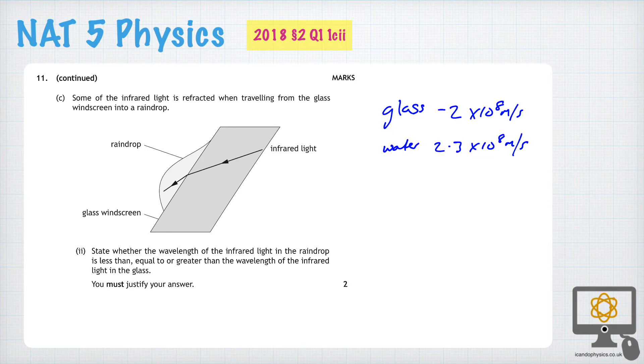And of course, because we know the formula V equals F lambda, if the speed increases and the frequency stays the same, then the wavelength must also increase.